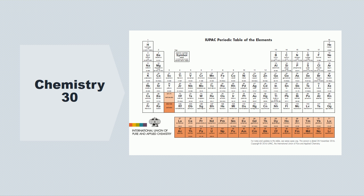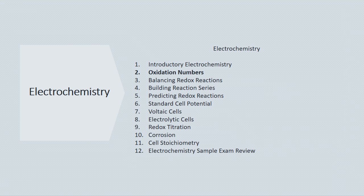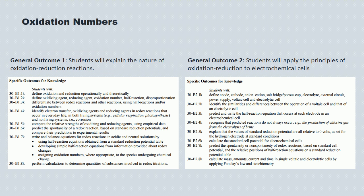Hello and welcome to lecture two in electrochemistry. Today we're going to be talking about oxidation numbers. These are the learning outcomes prescribed by Alberta Learning. They form the basis for the bulk of the diploma exam questions you'll see, and I'm providing them to you in each lecture to keep tabs on how well your progress is coming in the unit.